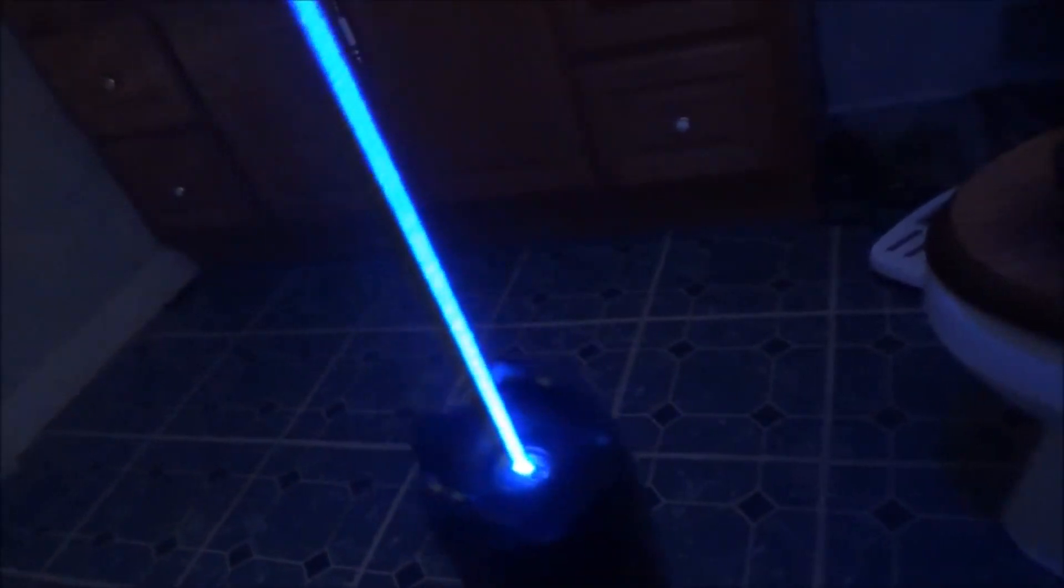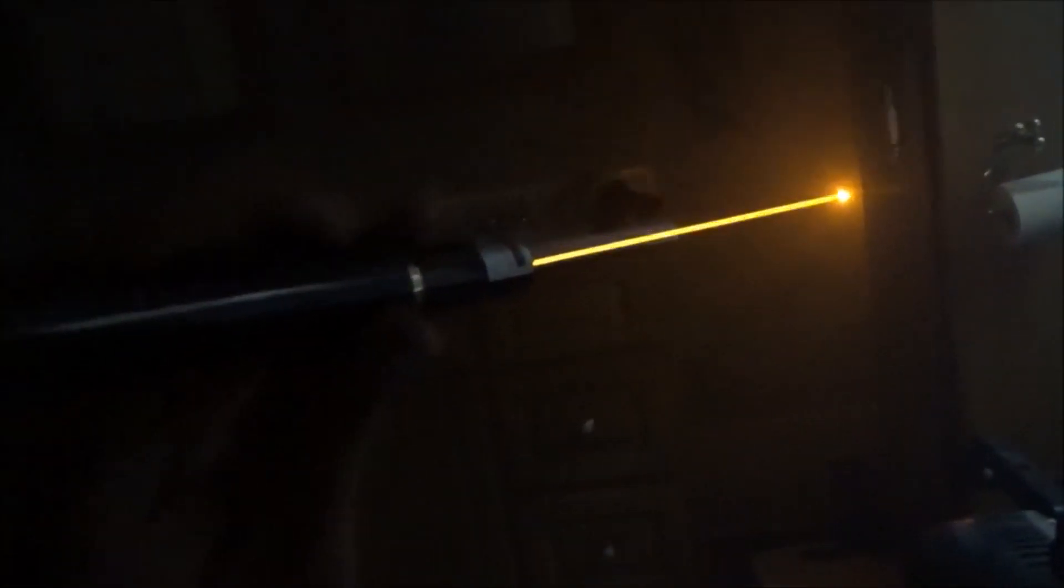DPSS blue and yellow lasers, such as 473 nanometer blue or 589 nanometer yellow, typically hold very low efficiencies below 5%, meaning a 1 watt pump diode will pass through the crystals and produce a beam that may only be 20 milliwatts, or 1/50th of a watt.